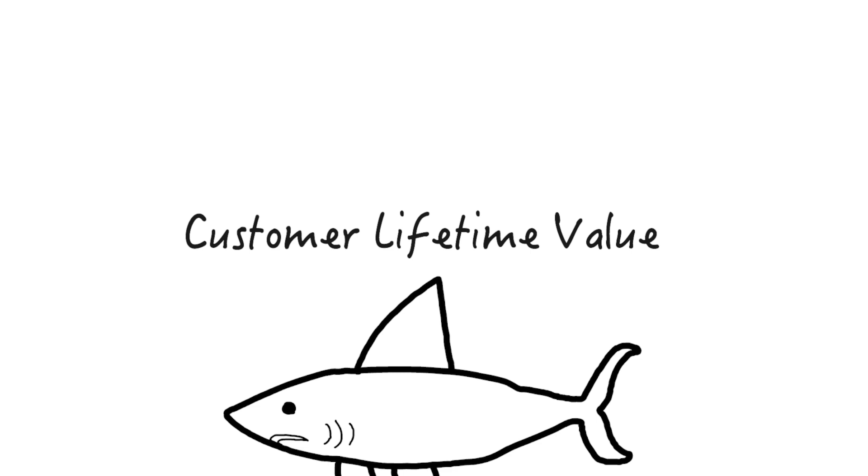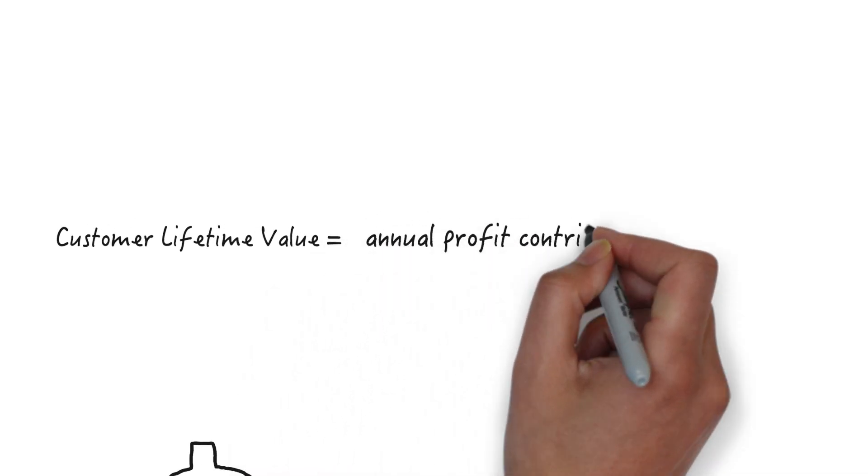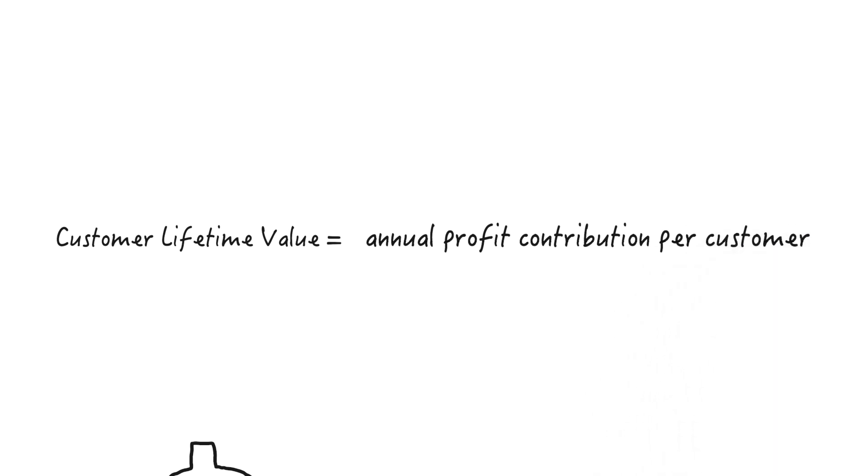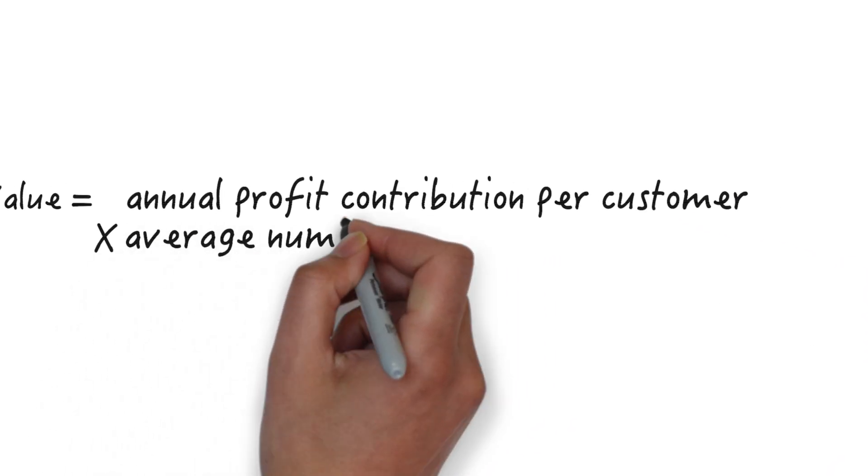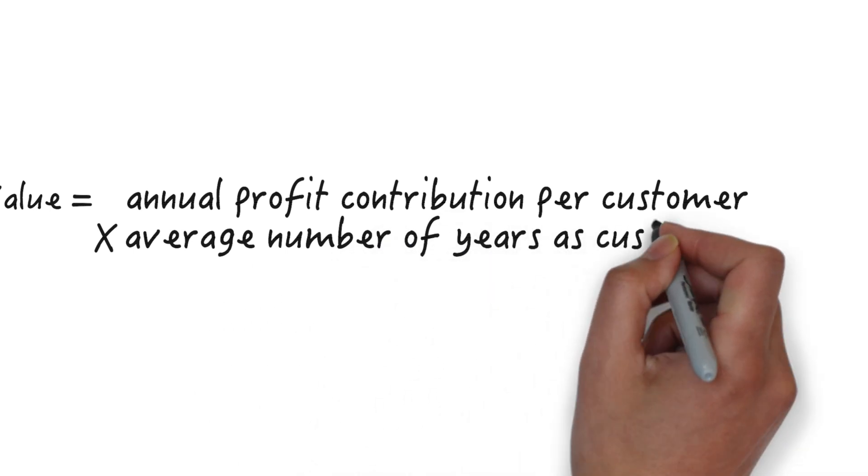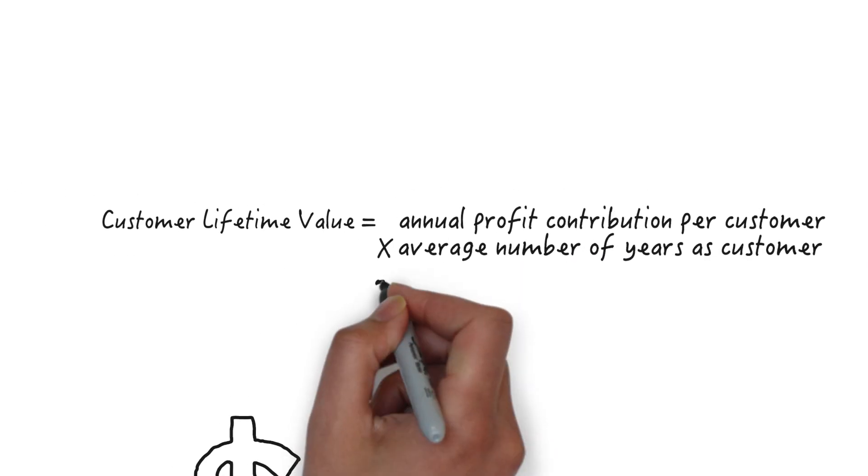Here comes some math. Let's start with the most basic formula for CLV. CLV equals the annual profit contribution per customer times the average number of years they remain a customer minus the initial cost of acquiring a customer.